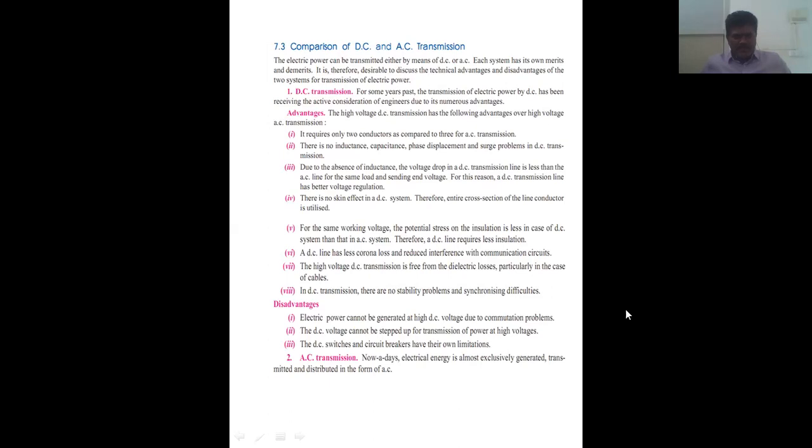In DC transmission there is no stability problem and synchronizing difficulties. The disadvantages are: electrical power cannot be generated at high DC voltage due to commutation problems. DC voltage cannot be transformed for transmission at different voltage levels. DC switches and circuit breakers have their own limitations.